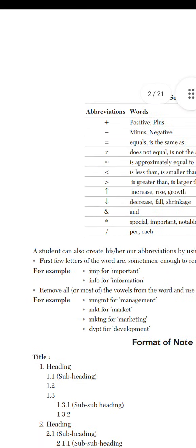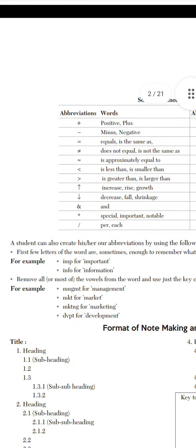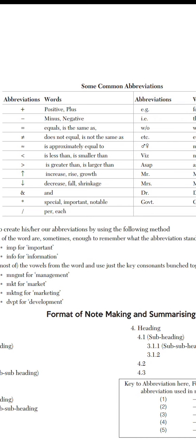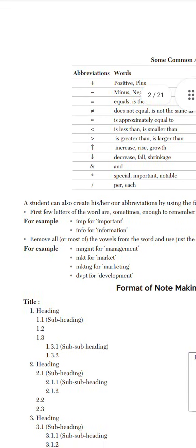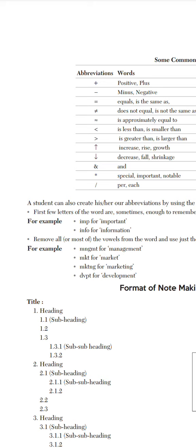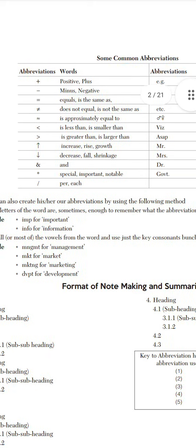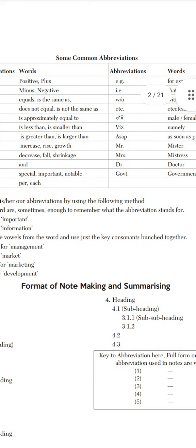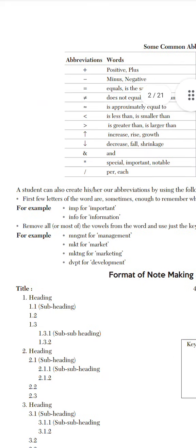A student can also create their own abbreviation by using the following method. First, few letters of the words are sometimes enough to remember what the abbreviation stands for. For example, important can be abbreviated as 'imp', information as 'info'.